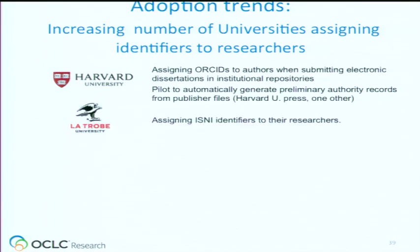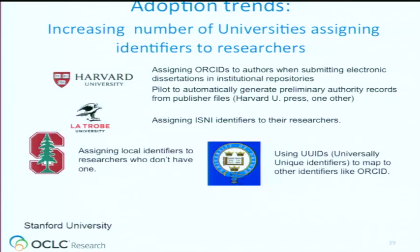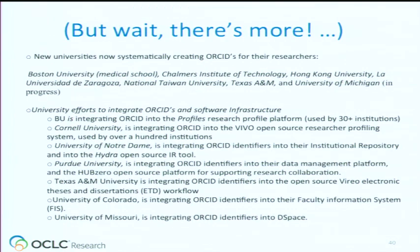In universities, we're seeing universities assign different sorts of identifiers in different ways. Some are doing it systematically, some are bulk registering, some are tying it to their HR systems, some have an opt-in. Since we wrote this draft, we got a list of even more adoptions and integrations into the infrastructure that universities use to manage information — like electronic thesis and dissertation systems, institutional repository systems, and profile systems.